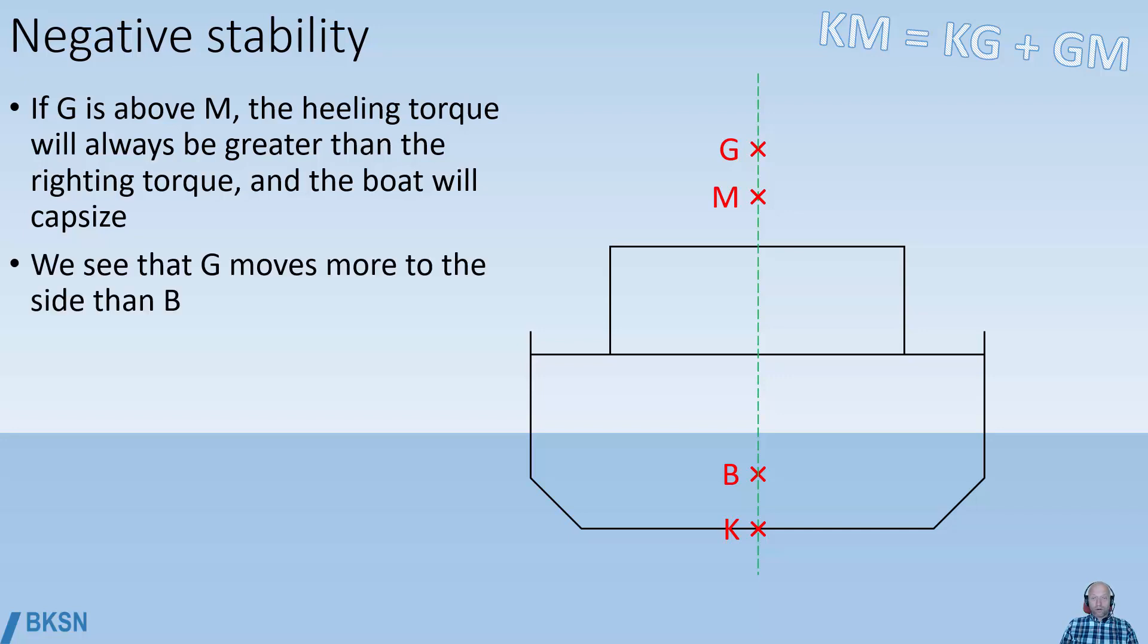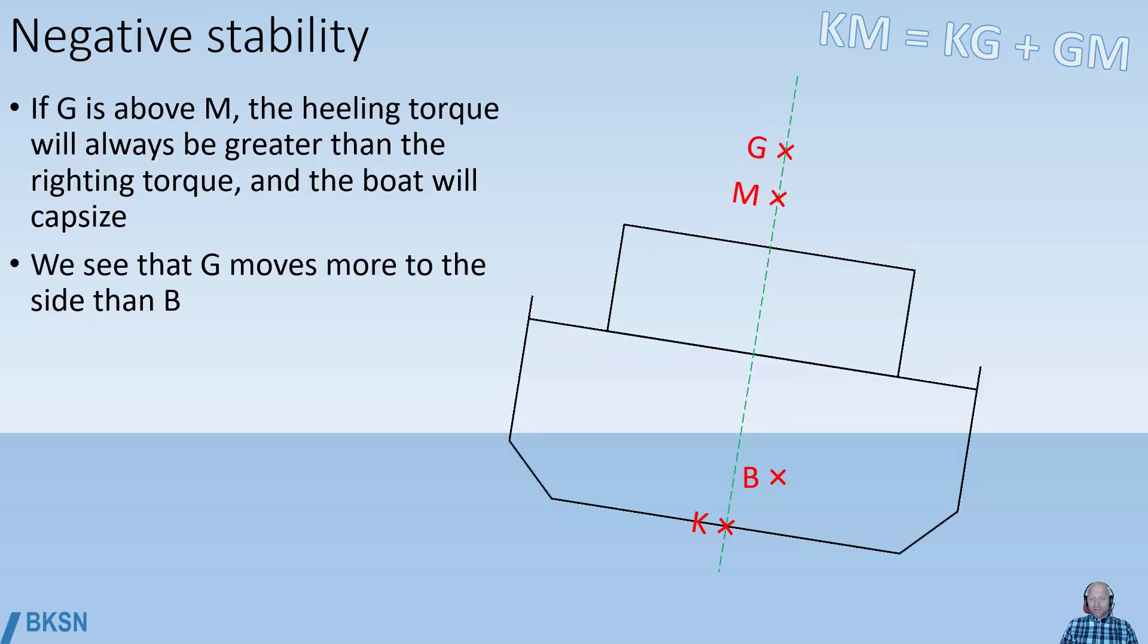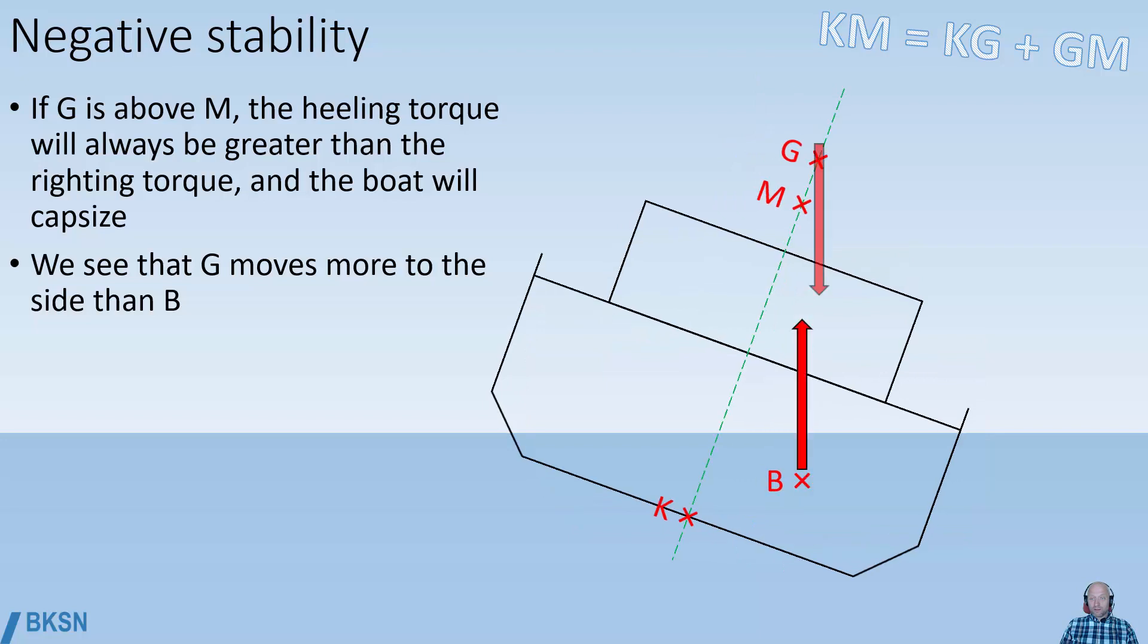We see that G moves more to the side than B when the vessel moves over. So this is something that you want to avoid at all costs.